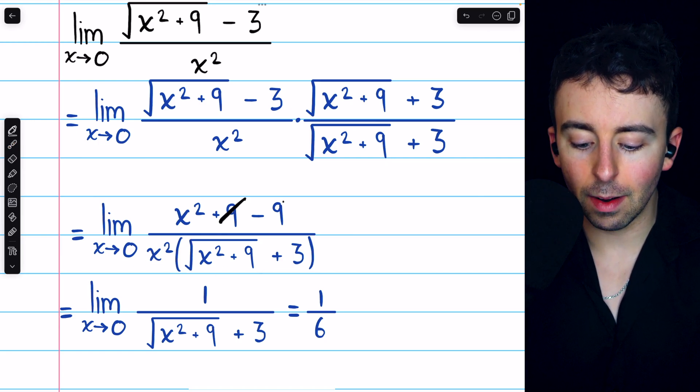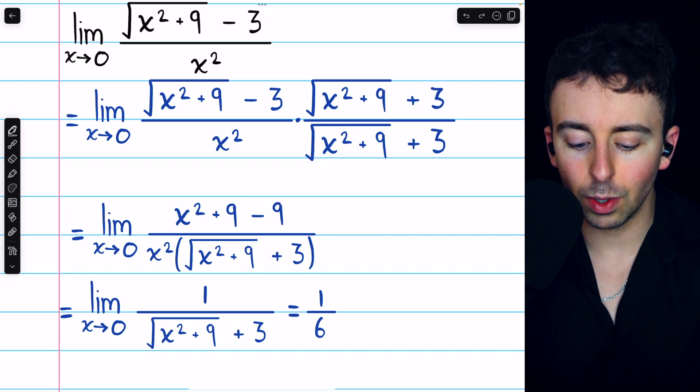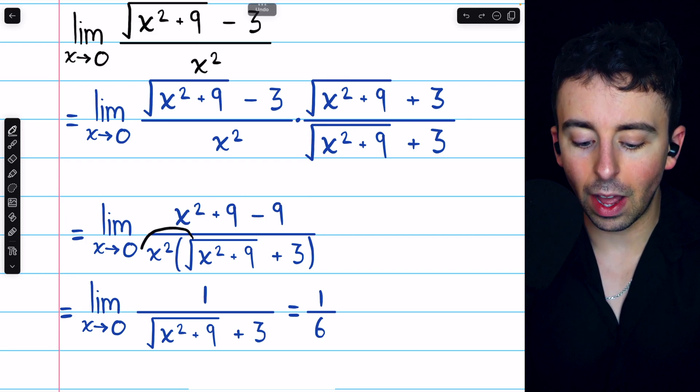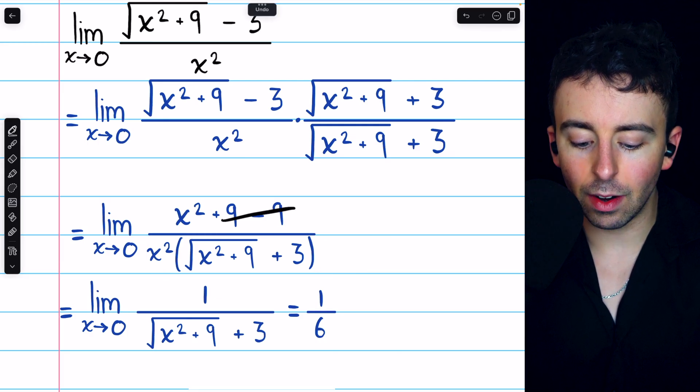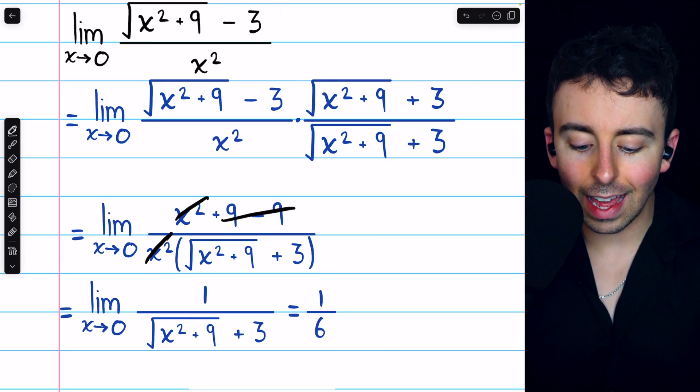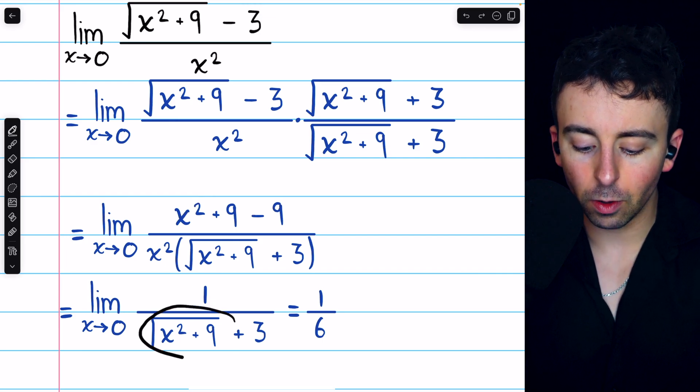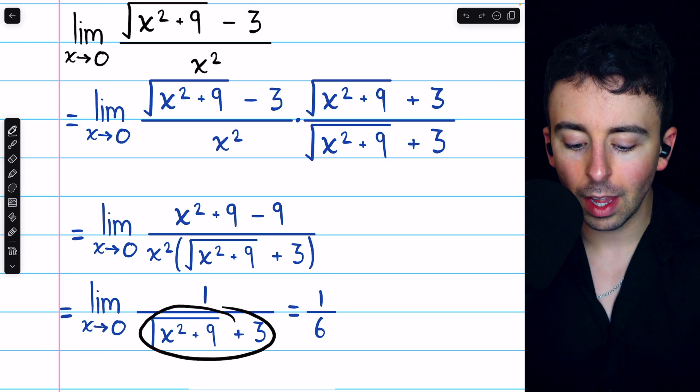We see then that 9 and minus 9 in the numerator cancel out, and so then we're just left with x squared divided by this. But then we can also cancel out those x squareds. So all that's left in the numerator is 1, and all that's left in the denominator is that conjugate term. At this point,